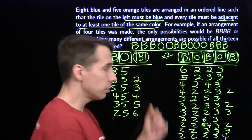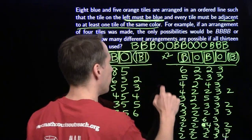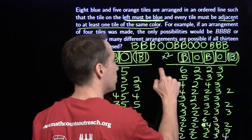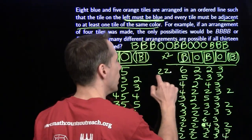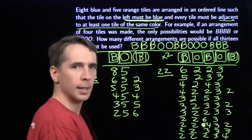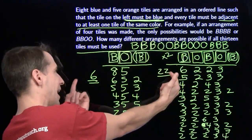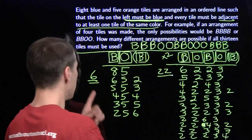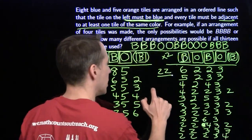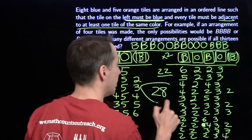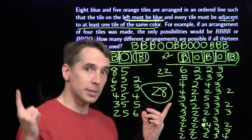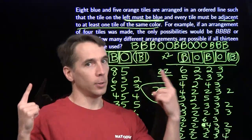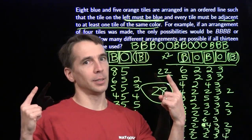We count these up — eleven — and then double it, since we can flip the two orange groups, giving twenty-two in this case. Then we add the two cases: twenty-two plus six equals twenty-eight. And we're sure we counted everything once and only once.